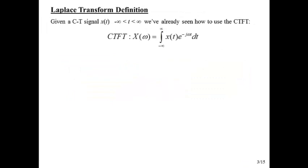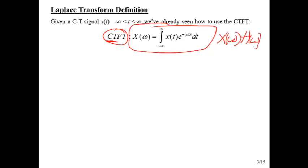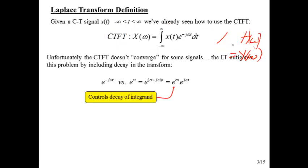We had the Z transform definition — you can compare and contrast everything we do here for the Laplace transform. The big concepts are the same. For discrete time, we talked about how the DTFT and the Z transform are related. The same kind of thing applies here. We have the CTFT — the continuous time Fourier transform — and we've seen how we can use it to analyze systems. The only problem is that there are some signals and systems for which this Fourier transform does not exist, meaning the integral does not converge.